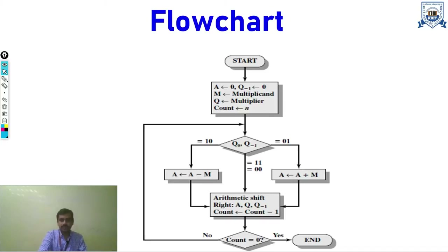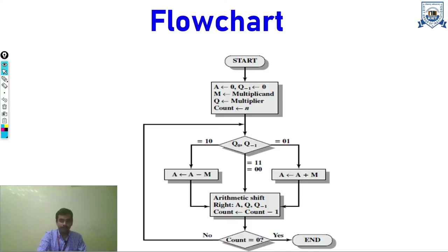After initializing, we check bits Q0 and Q-minus-1. Q0 is the LSB of the multiplier, and Q-minus-1 is the shifted bit. If Q0 Q-minus-1 is 0-1, we add the accumulator with the multiplicand. If it is 1-0, we subtract the multiplicand. If it is 1-1 or 0-0, we simply perform an arithmetic right shift.